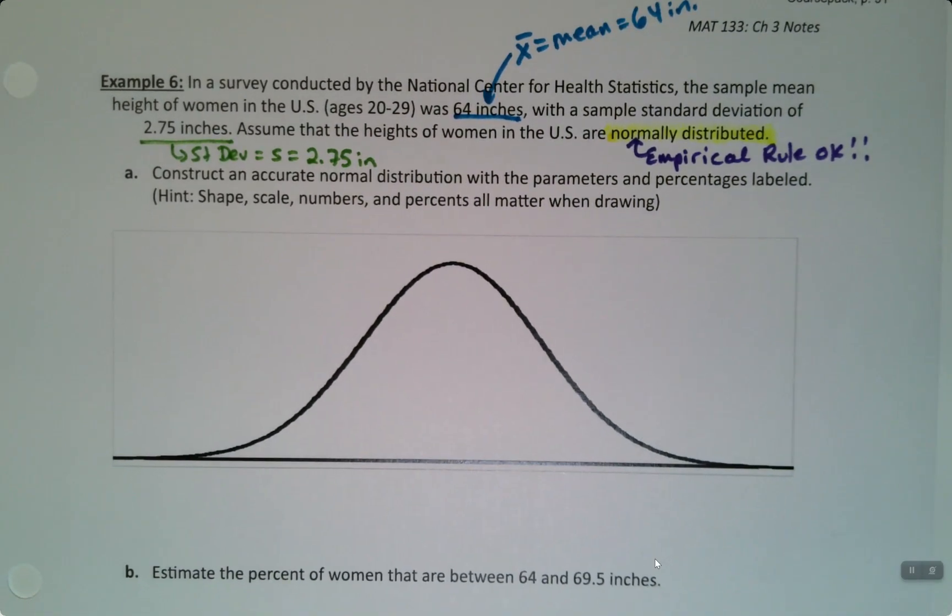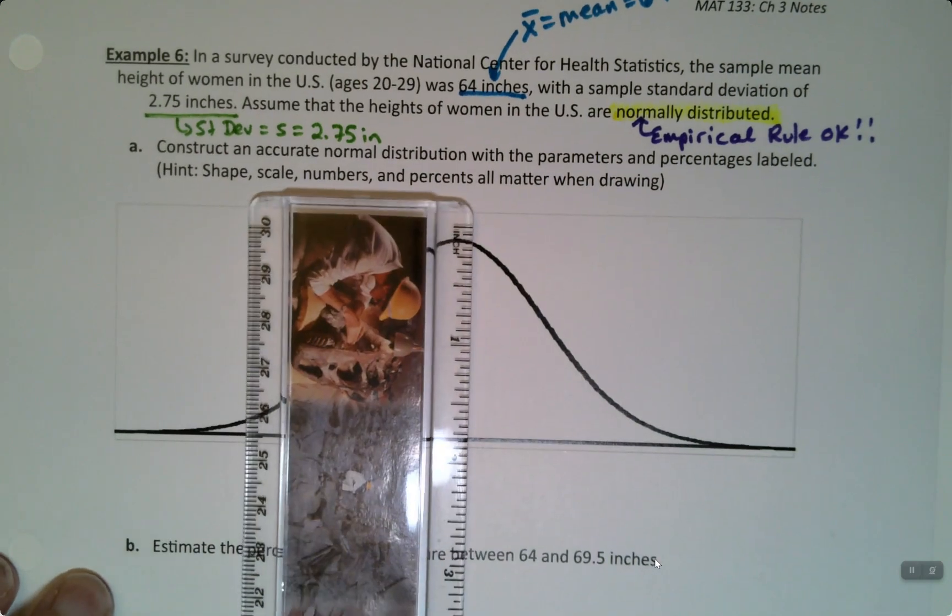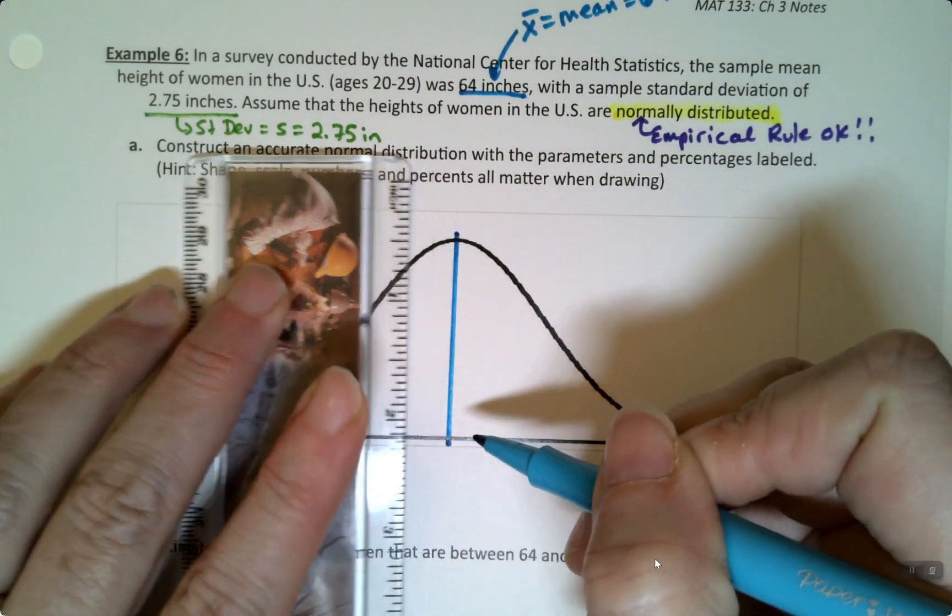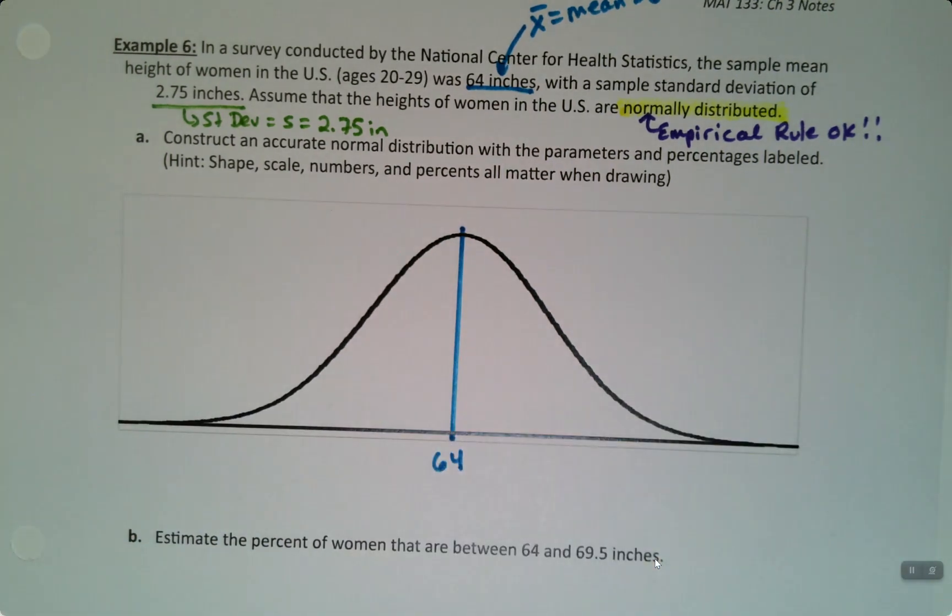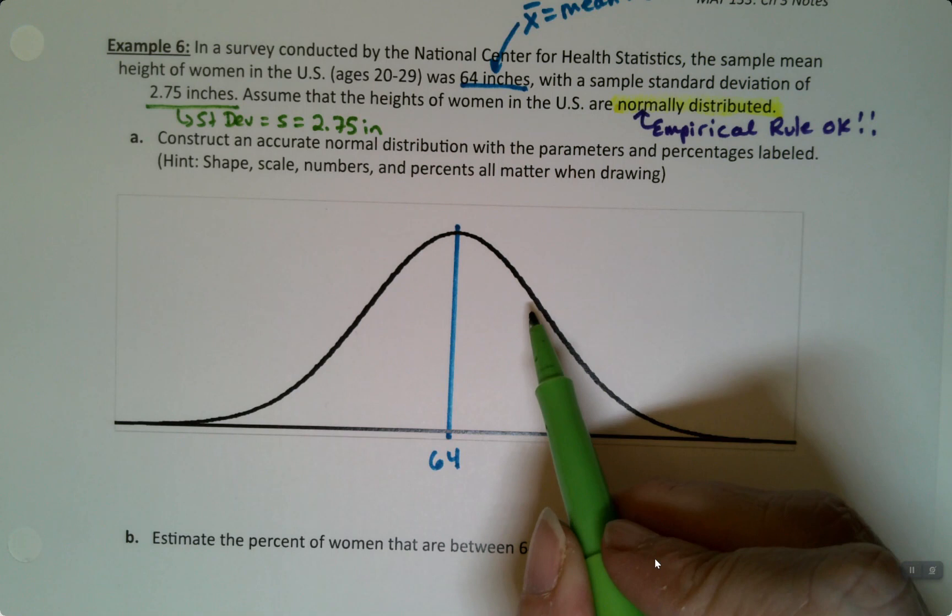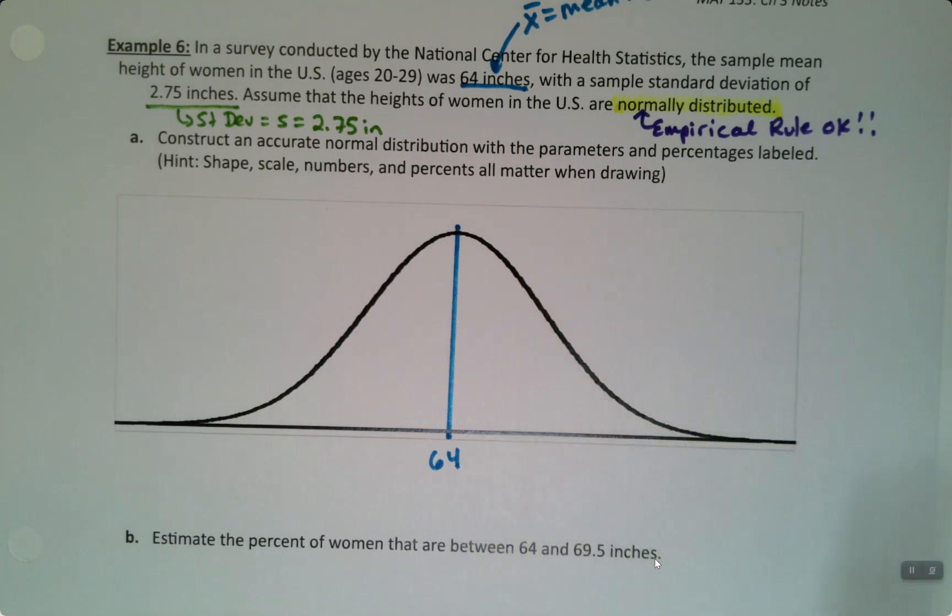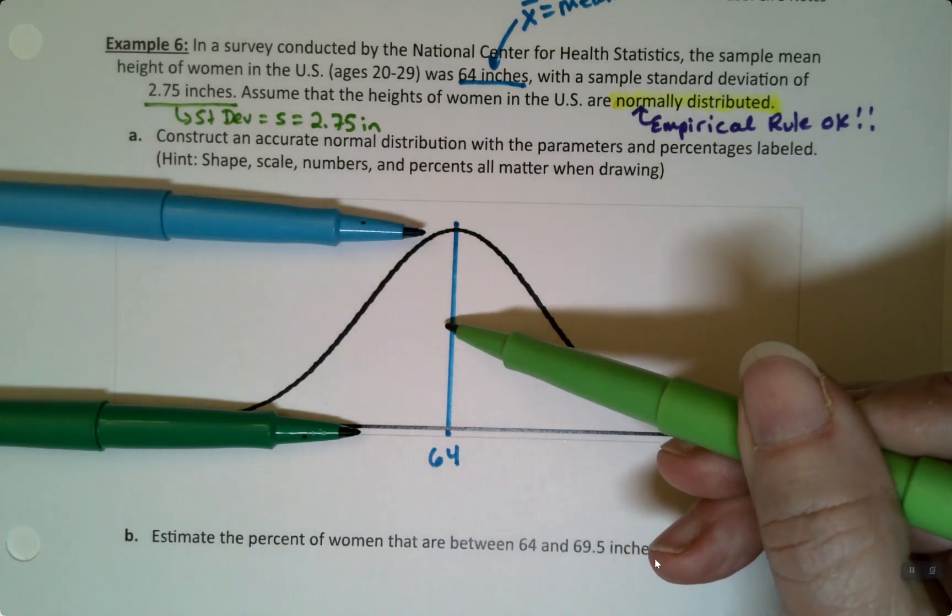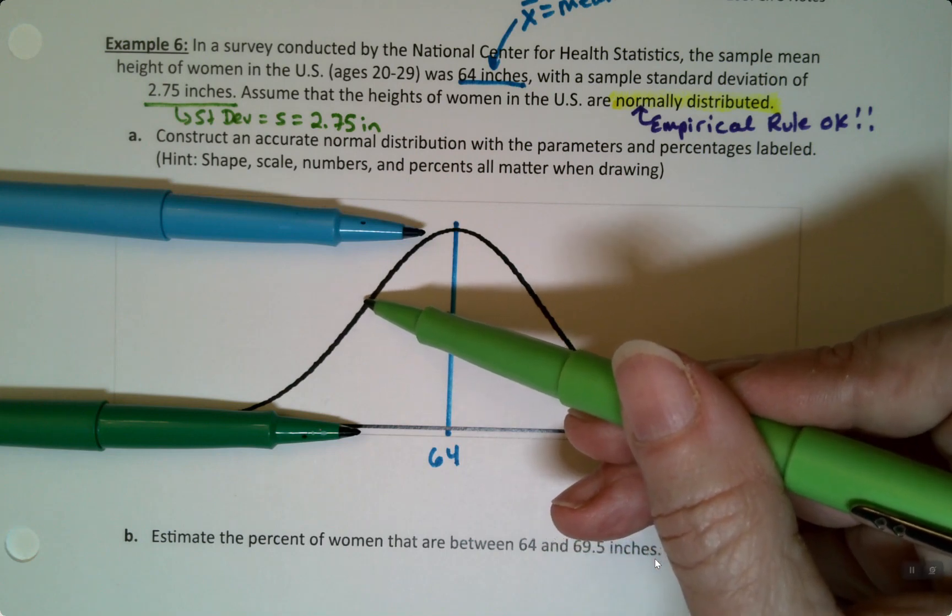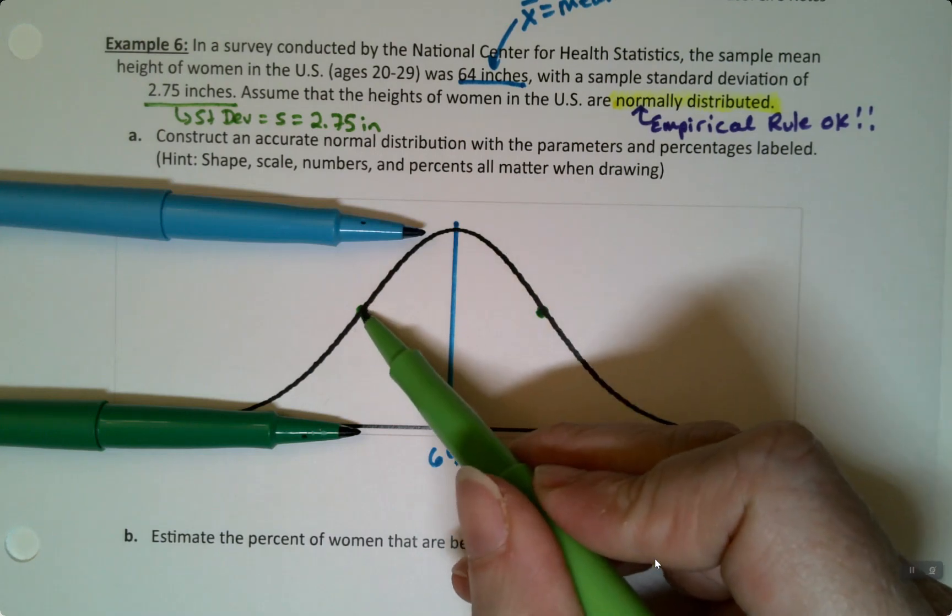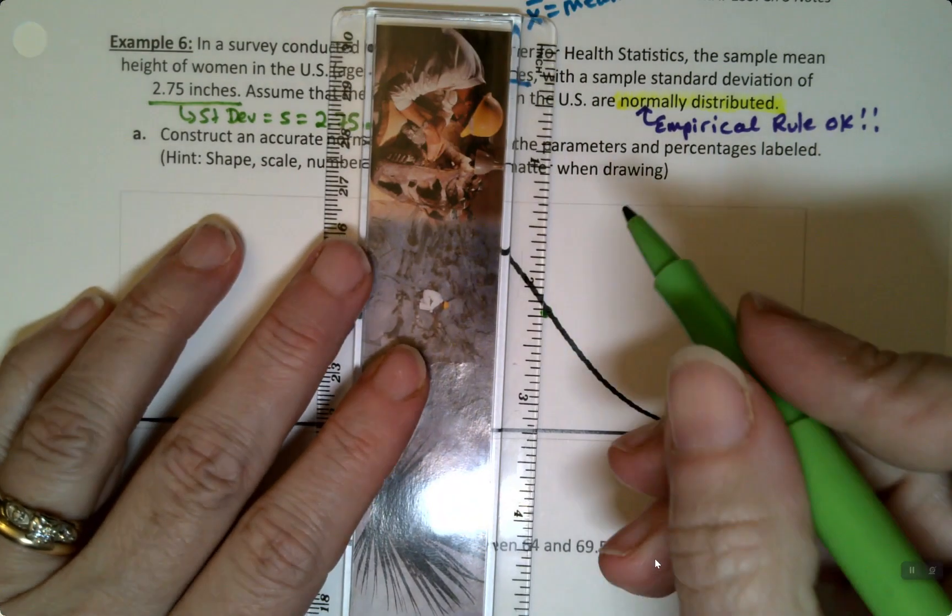Now, for the sake of all of our sanities, I do have a computer printout here of what an empirical rule curve looks like, a normal curve looks like. So it's a bell-shaped curve, and what we're going to do is where the center line falls is where we're going to put the mean. So the mean is right here at 64. Now, this is the part that you have to be able to kind of get good at. You have to be able to gauge where the inflection points fall.